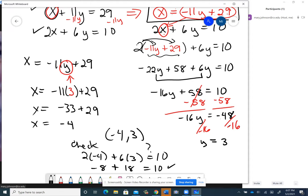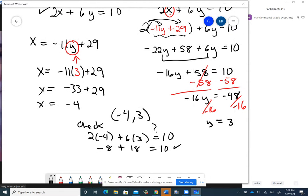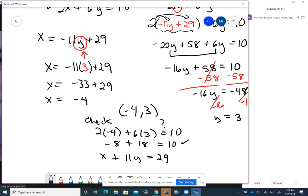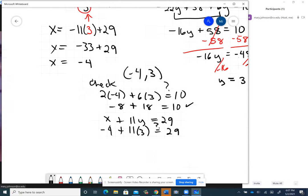And I think I'll go ahead, since I plugged into a different form, the first equation was x plus 11y before I moved anything equals 29. So let me go back to the original and plug in the negative 4 for x and the 3 for y. And see if that works. And it does, because negative 4 plus 33 equals 29. So it works there. So I know I'm right.